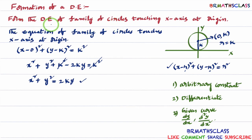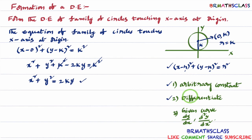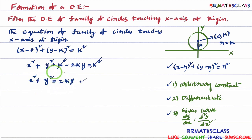To form a differential equation, as we discussed in previous classes, we remember three steps. First, identify the number of arbitrary constants present in the equation. Then differentiate that many times. In this equation, k is the arbitrary constant and 2 is a fixed constant, so there is only one arbitrary constant k. Therefore we differentiate only one time.